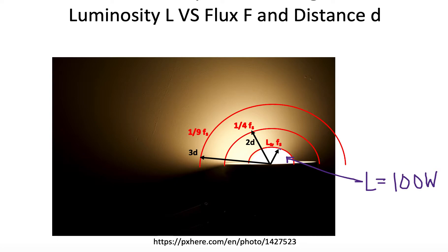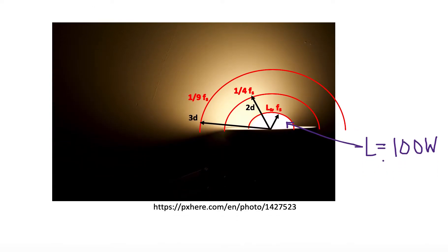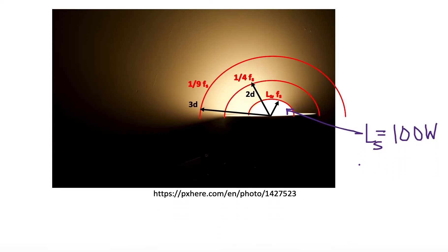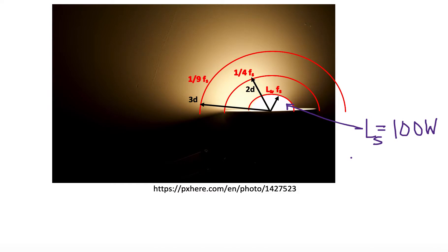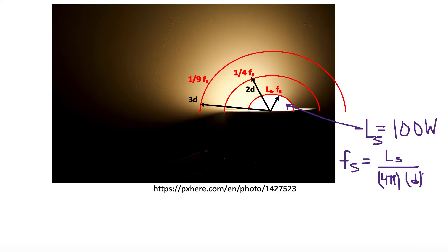Now we want to find what the flux is at the surface of the light bulb. The flux at the surface, just like the luminosity at the surface, will have subscript s to indicate it's at the surface. The flux at the surface is the luminosity at the surface — 100 watts — divided by the area the light spreads over, which is 4π, times the distance d squared. That is the definition of flux at the surface: F_s = L_s / (4πd²).